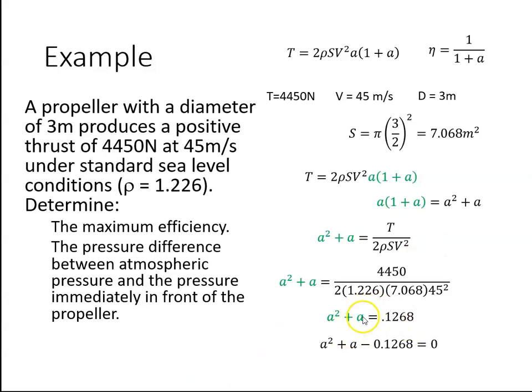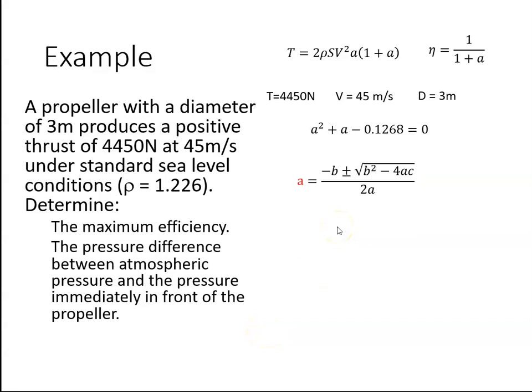When I bring that to this side, we get a quadratic equation. This is just a standard quadratic equation. To solve that, we will use this formula: minus B plus or minus square root of B squared minus 4AC, all over 2A.